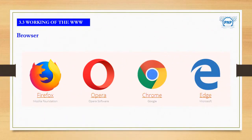Working of the WWW. WWW means World Wide Web. The internet user needs a program called a browser to access information on the WWW. The first web browser, called Mosaic, was introduced in 1993 by the National Center for Supercomputer Applications, NCSA.